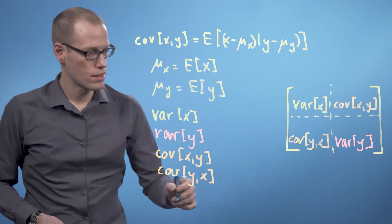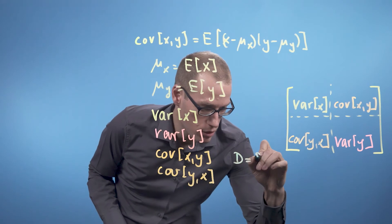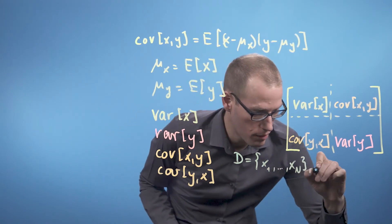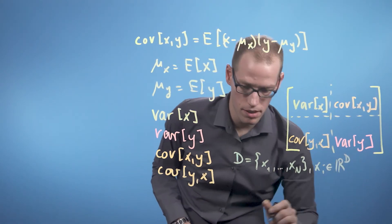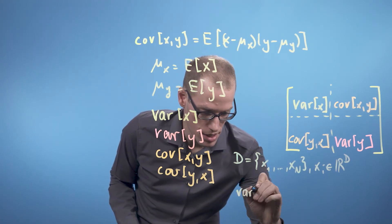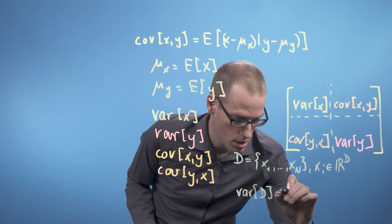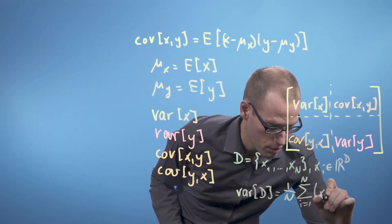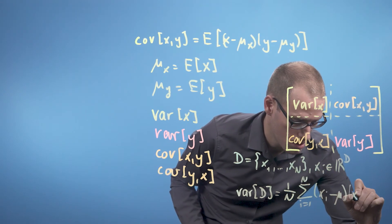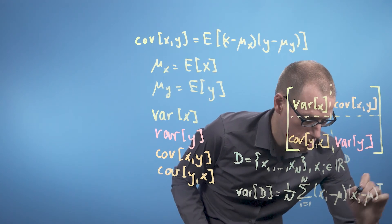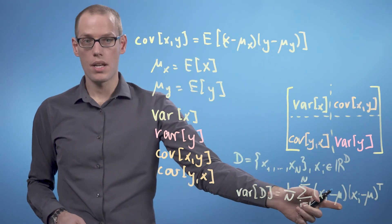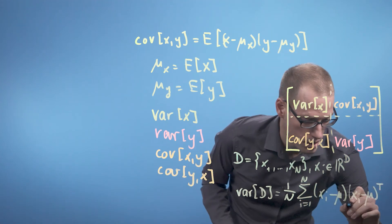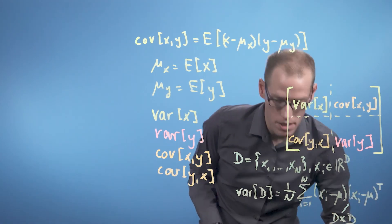If we now look at d-dimensional datasets, let's say we have a dataset consisting of n vectors x_1 to x_n, and every x_i is in R^d, then we can compute the variance of this dataset as 1/n times the sum from i=1 to N of (x_i - mu)(x_i - mu)^T, where mu is the mean of the dataset. This is called the covariance matrix of the data, and this is a d by d matrix.